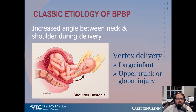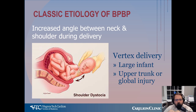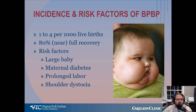The classic etiology of obstetrical brachial plexus palsy is an increased angle between the neck and shoulder during delivery. In a vertex delivery with the head down, this can occur with excessive traction being pulled upwards where the plexus is pulled. It's a higher risk with a large infant. This type of injury can cause an isolated upper trunk injury, or it can actually be a global total plexus palsy.